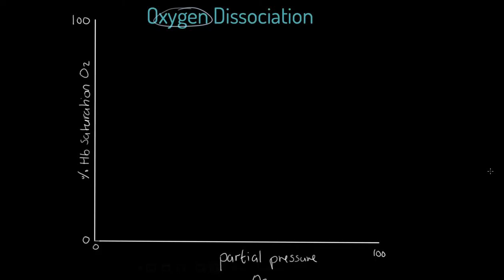We've got this graph here. On the x-axis we've got the partial pressure of oxygen, so whether it's a very high partial pressure to the environment around it. And on the y-axis we've got percentage of hemoglobin saturation with oxygen.